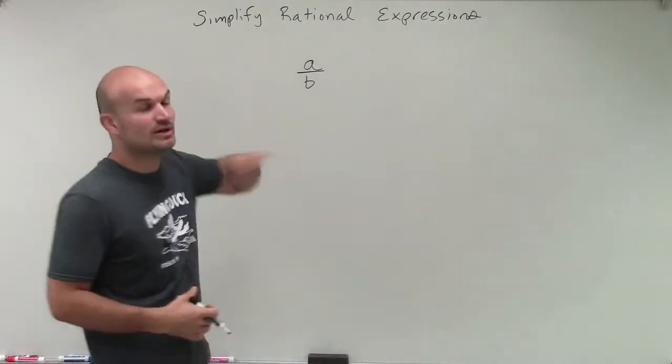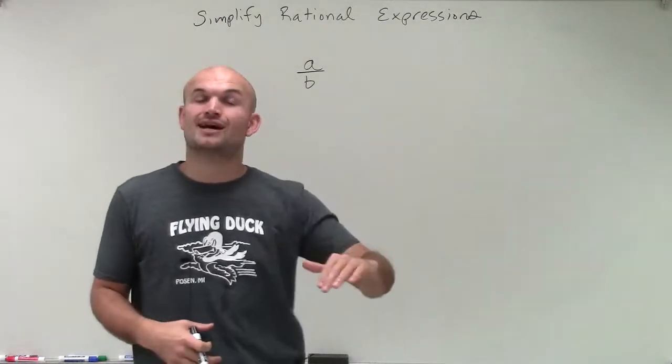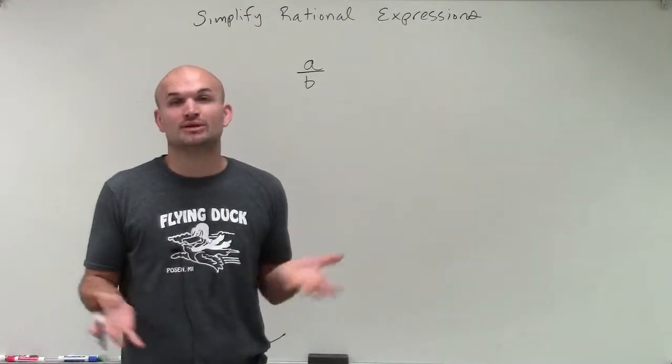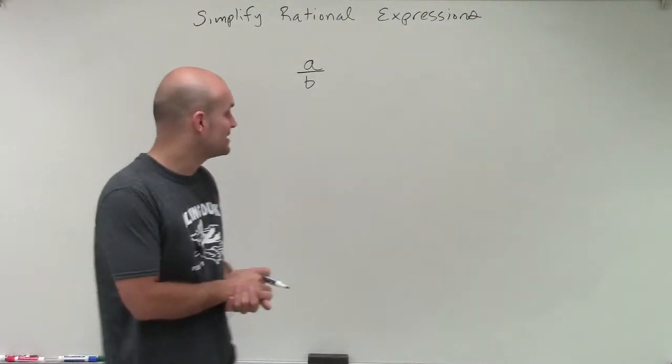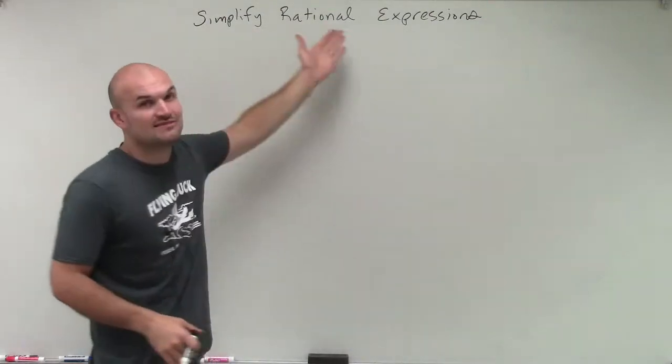Because what we're going to do is, when simplifying a rational expression, we're going to have a polynomial over another polynomial, where the denominator, that polynomial cannot be zero, cannot be equal to zero, obviously, because you cannot divide into zero.